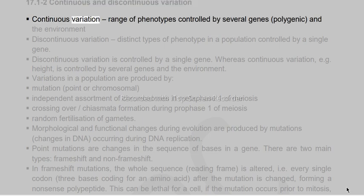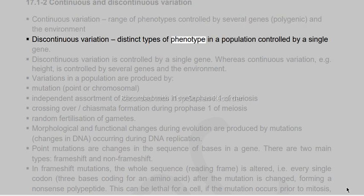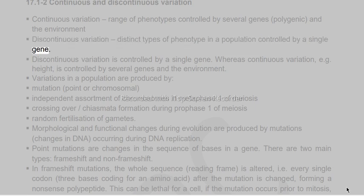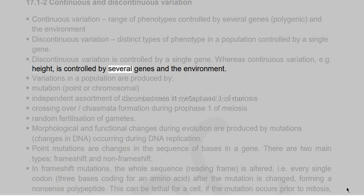Continuous variation produces a range of phenotypes controlled by several genes (polygenic) and the environment. Discontinuous variation produces distinct types of phenotype controlled by a single gene. Whereas continuous variation, e.g. height, is controlled by several genes and the environment.